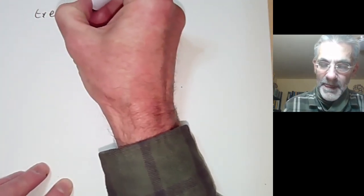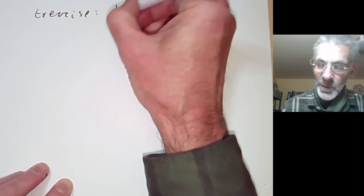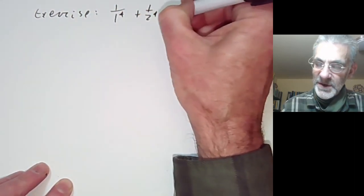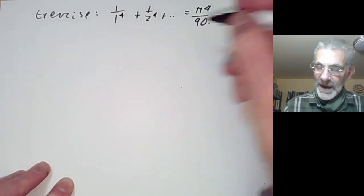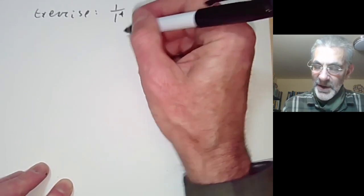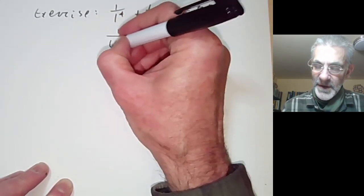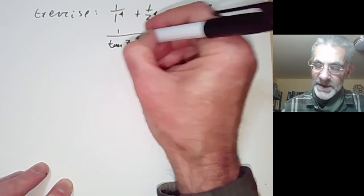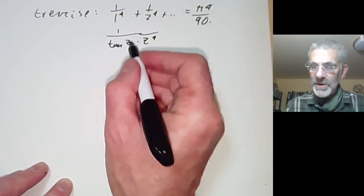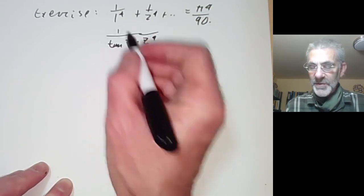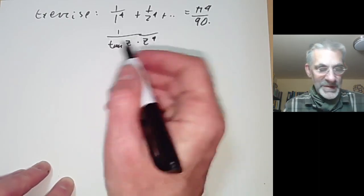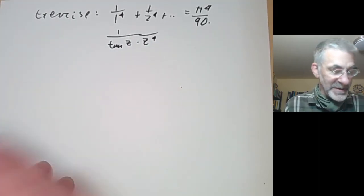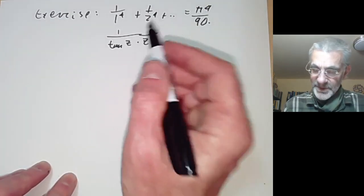As an exercise, show that 1/1⁴ + 1/2⁴ + … = π⁴/90, which Euler also computed. You copy the previous argument except you use 1/(tan(z)·z⁴). The main difficulty is that working out the power series expansion of 1/tan(z) requires going up to z⁴ or z⁵.